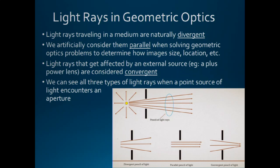Light rays traveling in a medium are naturally divergent — they want to get away from each other. We artificially consider them parallel when solving geometric optics problems to determine where the image will be located and what size it will be. When light rays encounter a converging lens, they come together; when passing through an aperture, some diverge, some become parallel, and some converge.